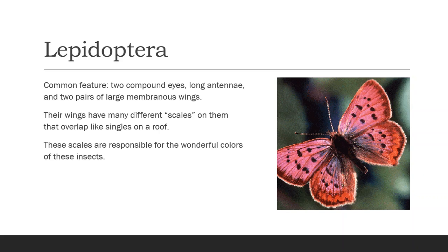If you go out to your roof and you have a shingle roof, you can actually see this. If you see the shingles on the roof, you can see how they lay over each other a little bit and they kind of lock each other in place. That's basically what's going on with the scales on the wings, just in a more beautiful way.